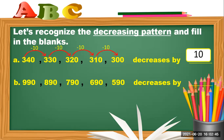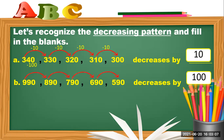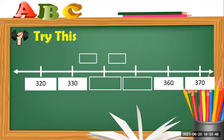In letter B, we have 990, and the next number is 890. So from 990 to 890, how much was subtracted? It decreases by 100. So 990 minus 100 is 890, 890 minus 100 is 790, 790 minus 100 is 690, and 690 minus 100 is 590.